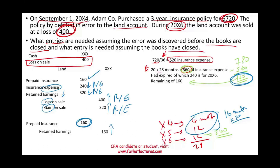So the net effect of this error is: reinstate a prepaid insurance asset of $160 (eight months remaining on the policy for 20X7), and increase retained earnings by $160, since retained earnings were understated by that net amount. At the end of 20X7, the prepaid insurance becomes an expense of $160, reducing retained earnings back to zero, and the mistake is fully resolved.